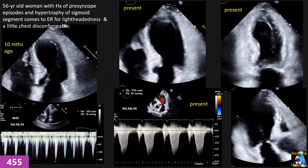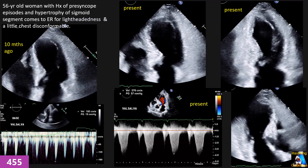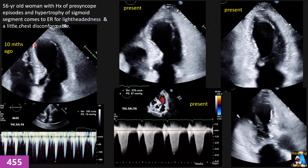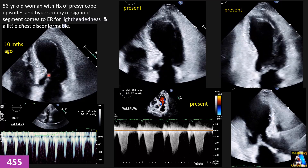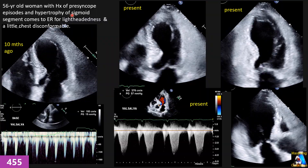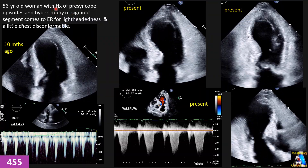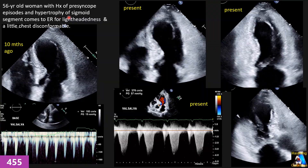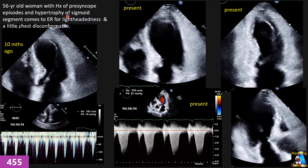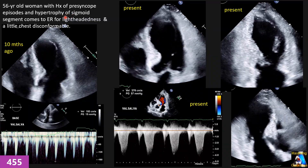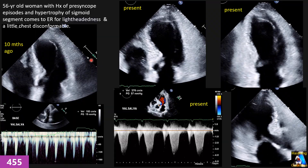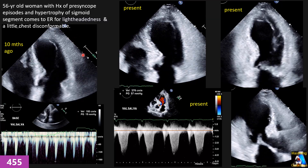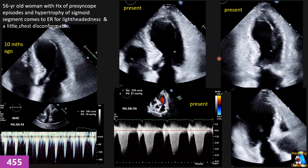Now let's go to our case. We have a 56-year-old woman with a history of pre-syncope episodes. On the previous study, we had a significant sigmoid with a thickness of 1.6 centimeters, and the patient had some pre-syncope episodes. This time she came with lightheadedness, a little chest discomfort, and shortness of breath with activity. Based on EKG, physical exam, and blood tests, they requested an echocardiography, which we performed.